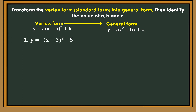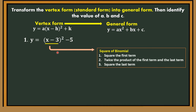Let's have number 1. y is equal to the quantity x minus 3, quantity squared, minus 5. It's in vertex form. The quantity x minus 3, quantity squared is a square of a binomial — therefore we can expand it. Just follow the 3 steps in squaring a binomial. First step: square the first term — that's x squared. Second step: twice the product of the first term and the last term. So x times negative 3 times 2 — the answer is negative 6x.